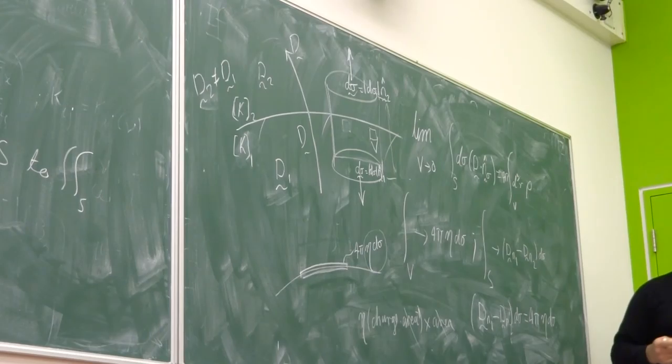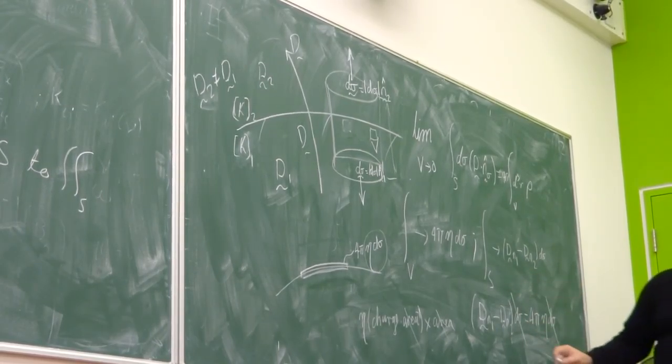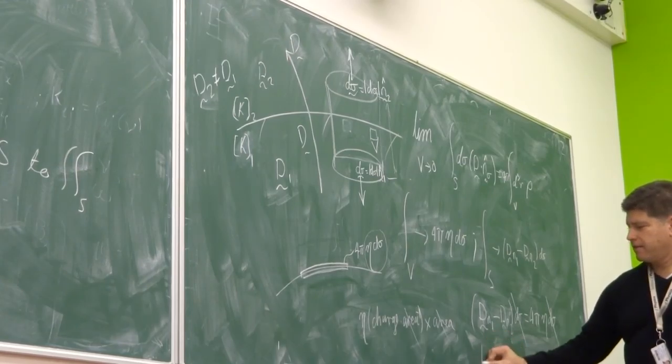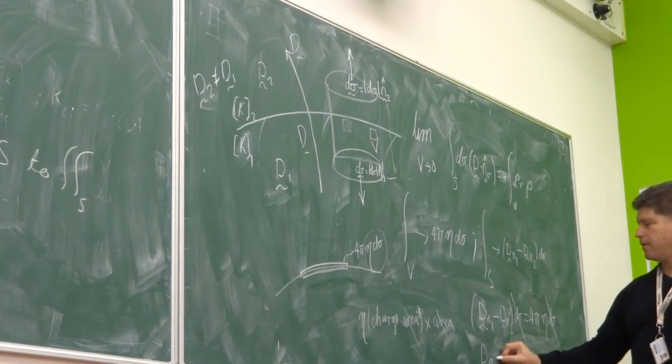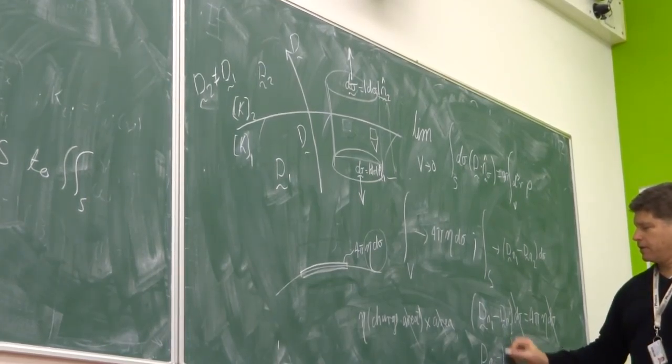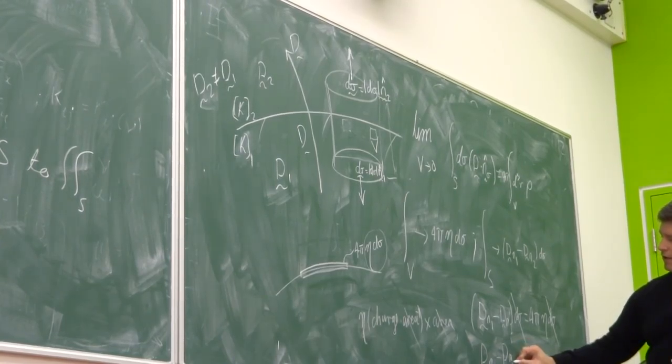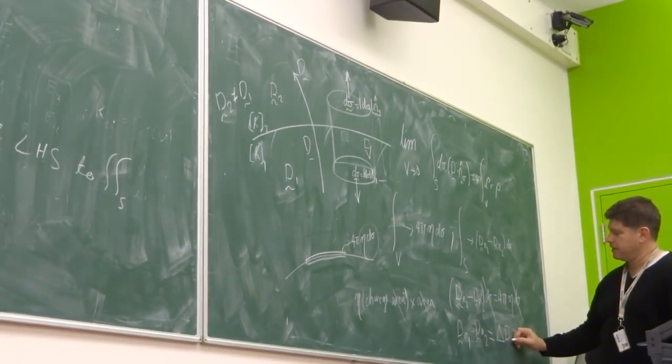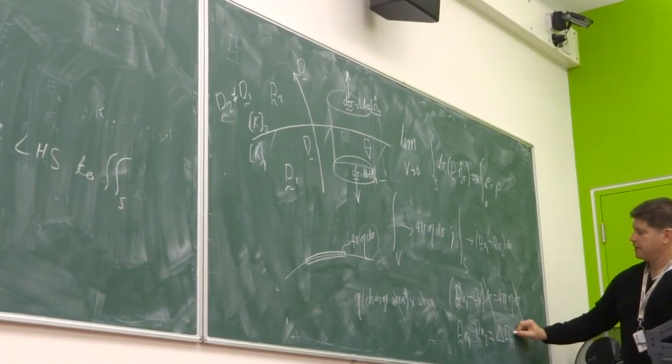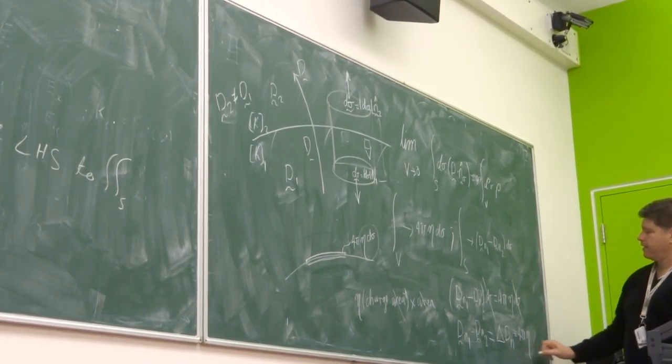Multiplied by the area equal to 4 pi eta d sigma, because the areas are common, which means you can cancel these two areas, and you're left with the fact that D N1, or not delta, D, and this is the normal on the other side, we can just summarize as delta D normal.